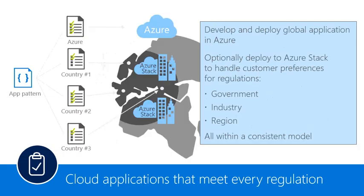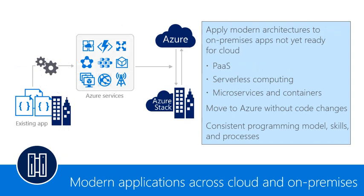The second scenario covers cloud applications that meet regulated requirements — from government, region, and industry — all within a consistent model approach, which allows us to use Azure Stack to handle those preferences. The third and last example is around modern applications across cloud and on-premise: using legacy systems with the latest tools offered by Microsoft — PaaS, serverless computing, microservices, and containers — to move to the cloud with the latest updates without the challenges of the old on-premise approach.